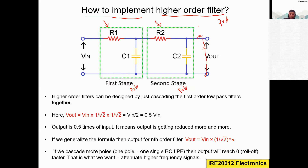Generalizing the formula: the output of an nth order filter is v_out = v_in × (1/√2)^n. If we apply a second order filter, n = 2, so the output is (1/2) × v_in = 0.5 v_in. For a third order filter, n = 3, and you can calculate mathematically how the output changes.